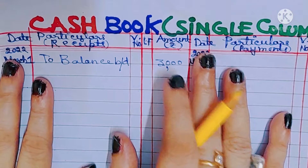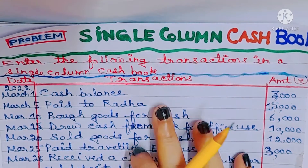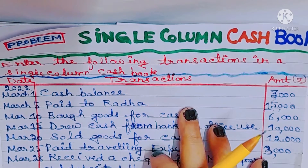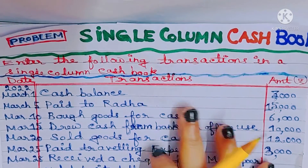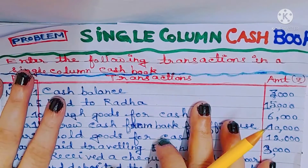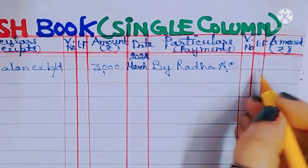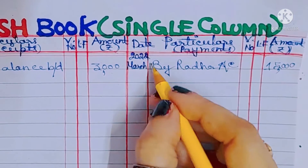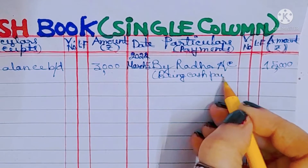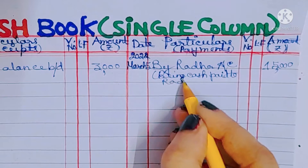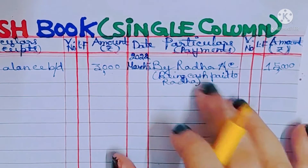The next transaction is on 5th March: paid to Radha 15,000. The journal entry will be Radha account debit to cash account. Since cash account is on the credit side, Radha will also be on the credit side. So we will write 'By Radha account' in the cash book on the credit side. Date: 5th March, amount: 15,000. Narration: cash paid to Radha. Narration is a must because cash book is also a journal — marks will be deducted in the exam if omitted.